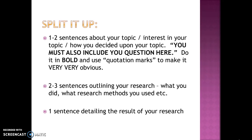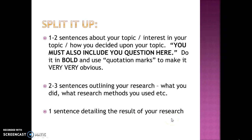At 150 words, you'll only have four or five sentences. Use one or two sentences about your topic, your interest in it, or how you decided upon it — some background information. You must also include your question, in bold and in quotation marks, to make it very obvious that this is the question you are asking. Use two or three sentences to outline your research and what methods you used, and give at least one sentence detailing the results of your research — your actual findings.